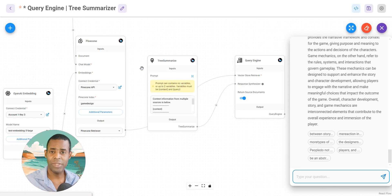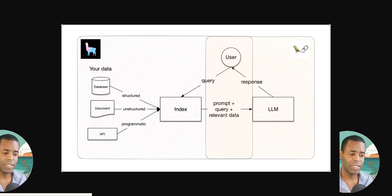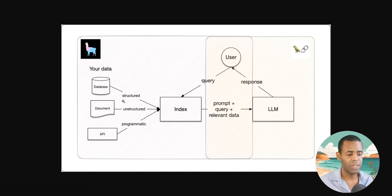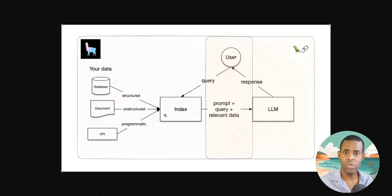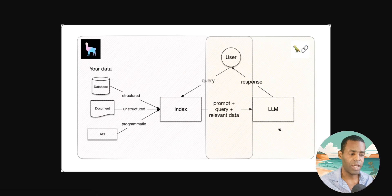One of the great things about this recent update is that it allows you to use Llama Index along with Langchain inside of your Flowwise applications. On one hand you have Llama Index with its powerful search indexing features — you send a query through Llama Index to your documents, and the response it generates is combined with your prompt and original query, then sent to an application inside of Langchain to generate a final response for your application.